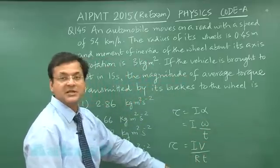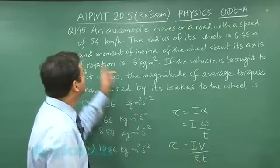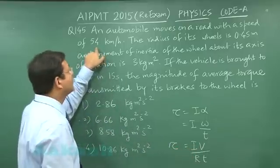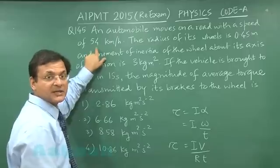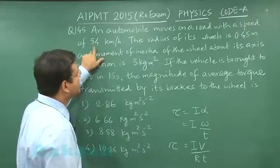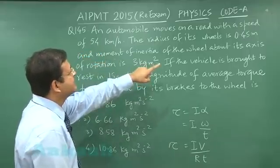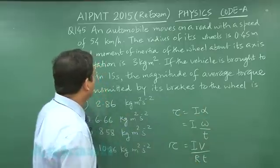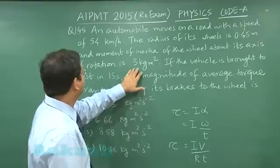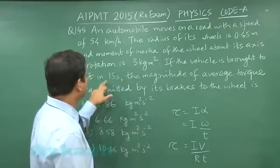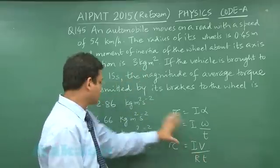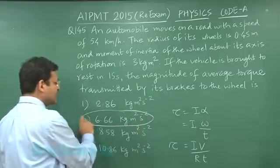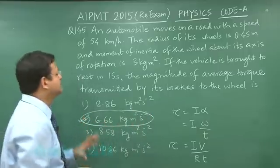Substituting the values: the moment of inertia I, the linear velocity given as 54 km/h which converts to 15 m/s, the radius is 0.45 m, and time is 15 seconds. Substituting all of them, you get the value 6.66 — this is the average torque that will be developed.